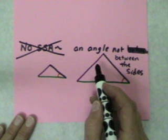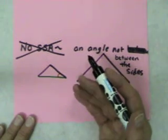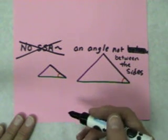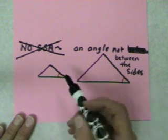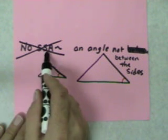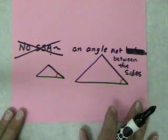We could sometimes find two different triangles that would be possible, one not similar and one similar. So we decided that we could not use side-side-angle as a shortcut.